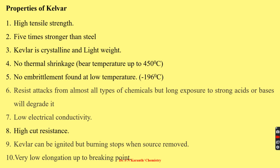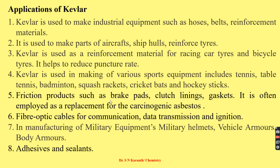Properties of Kevlar include: high tensile strength — it is five times stronger than steel; crystalline in nature; lightweight; no thermal shrinkage; and no embrittlement at low temperatures. It is resistant to attack from almost all types of acids, although prolonged exposure to strong acids or bases may cause degradation. It has low electrical conductivity and high cut resistance. Kevlar can be ignited but burning stops when the source is removed, indicating low flammability. A very low elongation at break is also observed.